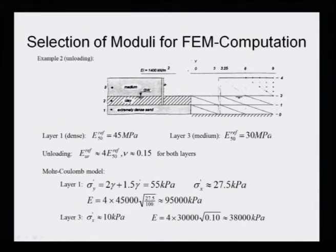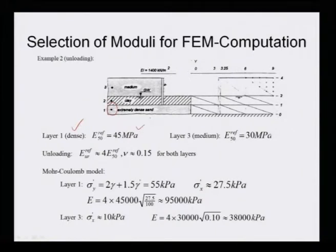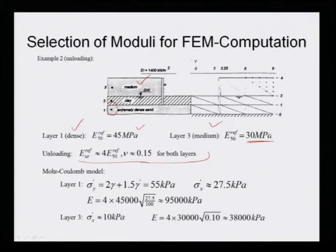In the unloading case, for layer 1 (dense sand), E50 is 45 MPa as per the correlation. Layer 3 is medium, E50 = 30 MPa. For the unloading case, the moduli for both layers will be 4*E50 and mu = 0.15.